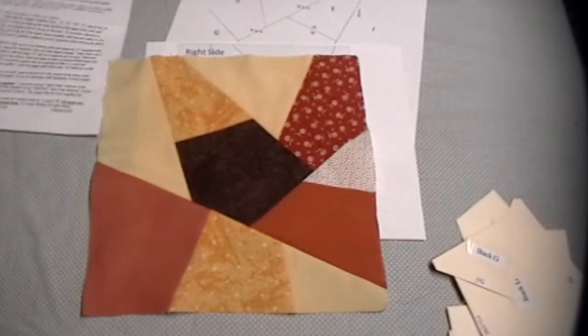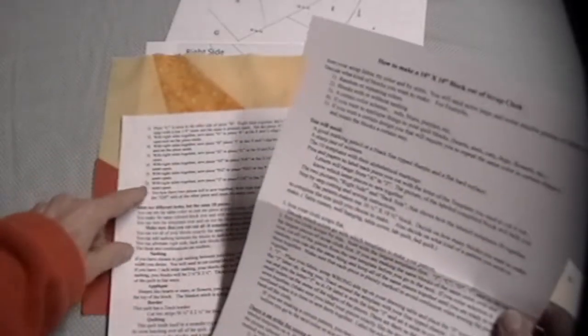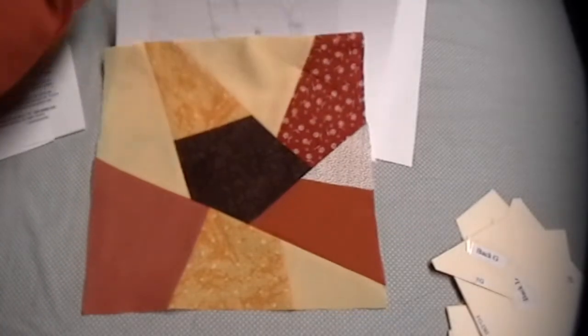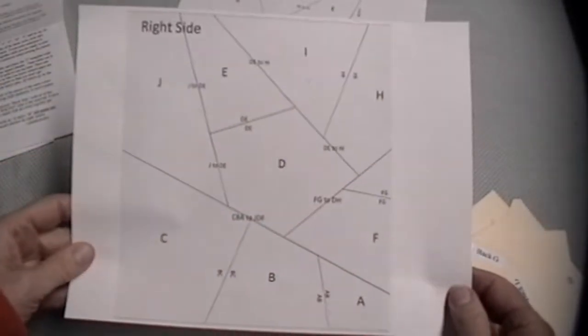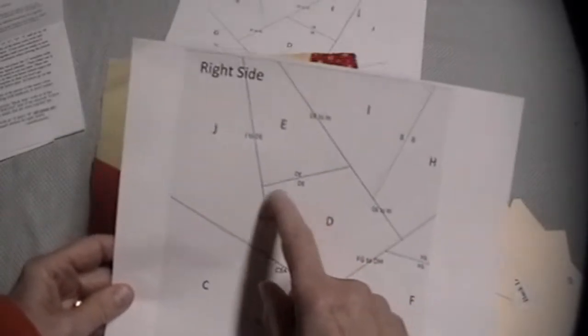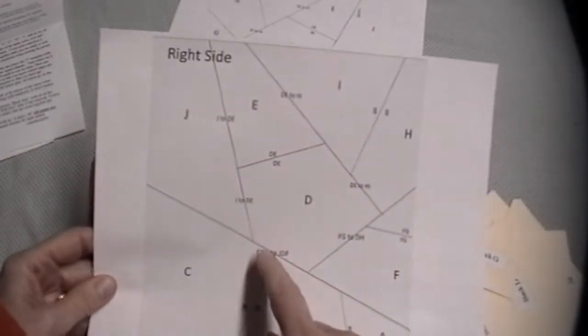Inside the pattern there are step by step instructions that take you through how to cut and sew the 10 templates together into the 10 and a half inch square. There is also a visual picture. The templates are alphabetically labeled and show the letters where the seams are connected.